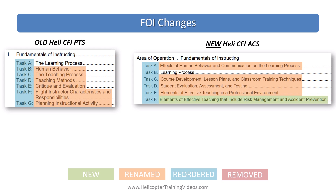Let's look at the changes to the fundamentals of instruction — there's a lot going on in this area. In area of operation one, you can see there are a lot of renamed tasks. The learning process remains the same name, just changed in order. Human behavior becomes 'the effects of human behavior and communication on the learning process.' The teaching process and teaching methods have been combined into Task C: course development, lesson plans and classroom training techniques.